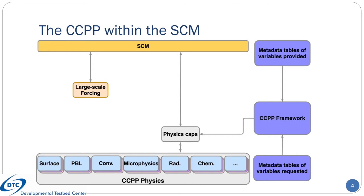One of the aspects that makes this particular single column model unique is its use of the CCPP, which is illustrated here. In this diagram, the SCM box represents the main calling program. It is responsible for time integration, setting up the vertical coordinate, calling all I/O routines, and maintaining the model's state. There is another software layer that handles the application of large-scale forcing, which one can logically think of as a data component. The CCPP physics on this diagram corresponds to the CCPP physics repository and is a collection of physics parameterizations with potentially more than one of each type.